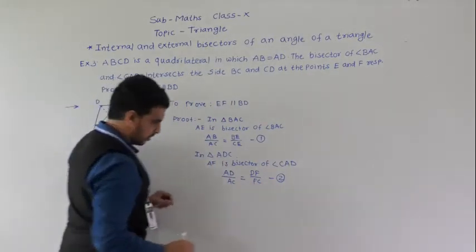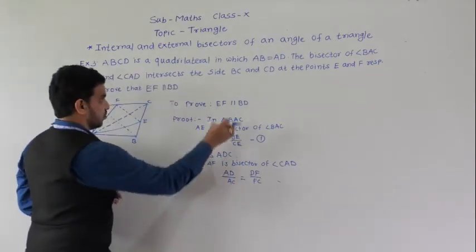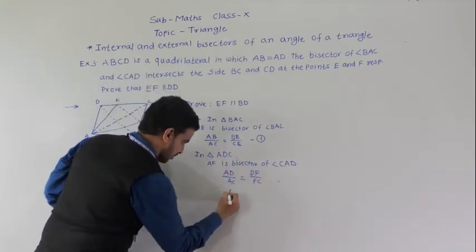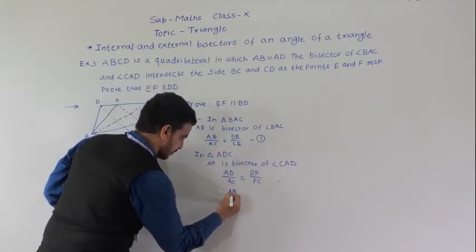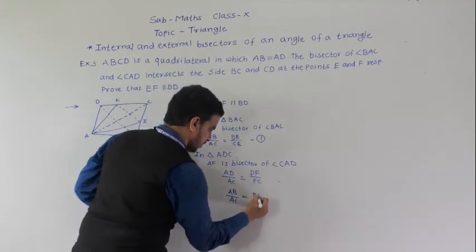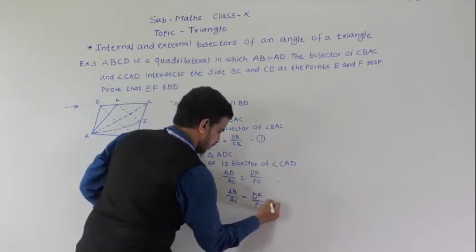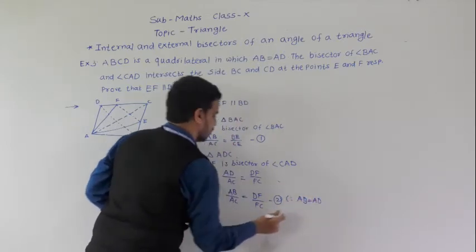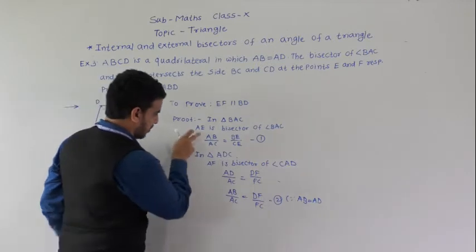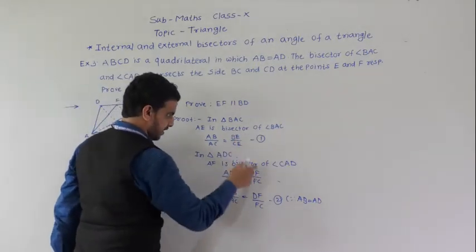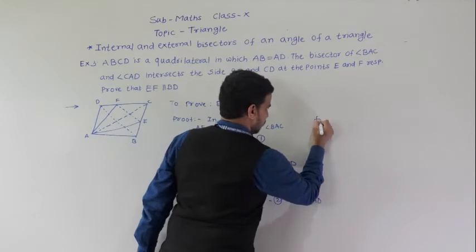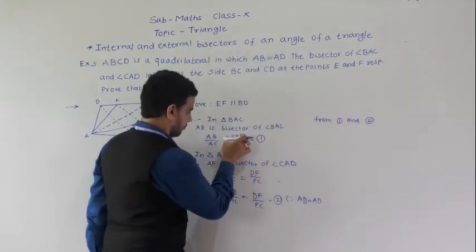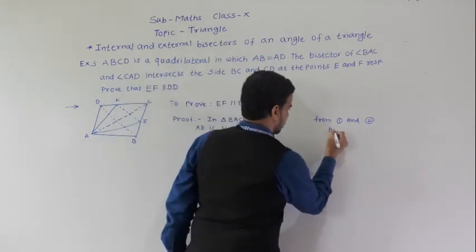Since AB = AD, we can replace AD with AB in equation 2, giving AB/AC = DF/FC. Now from equations 1 and 2, the left-hand sides are equal, so BE/CE = DF/FC.